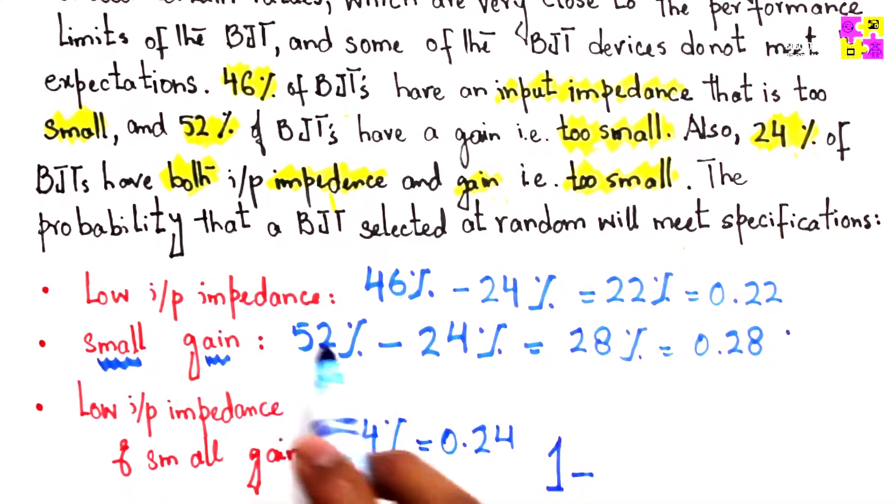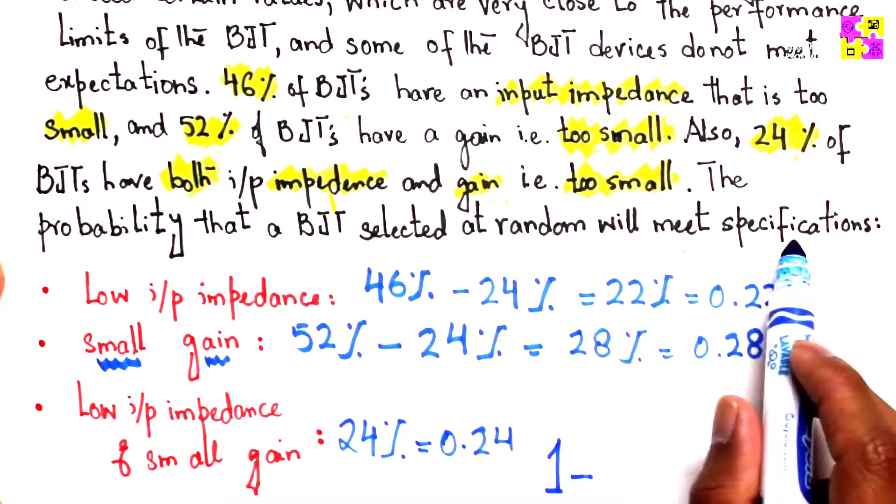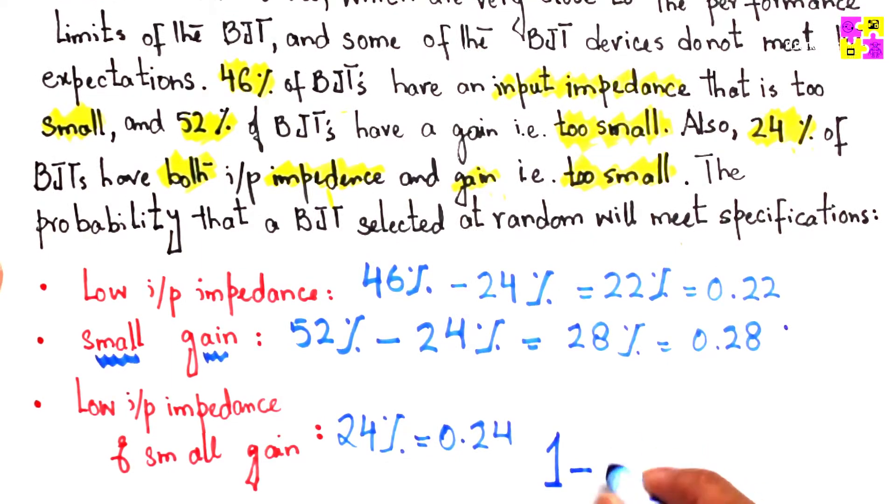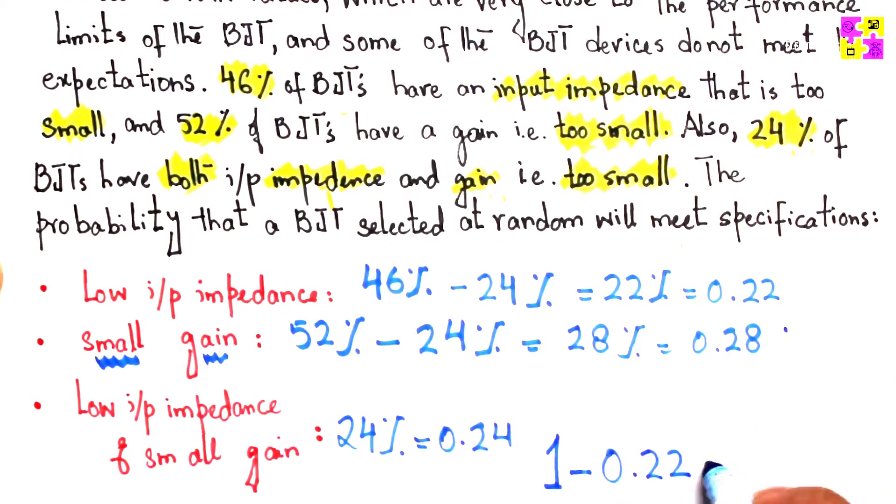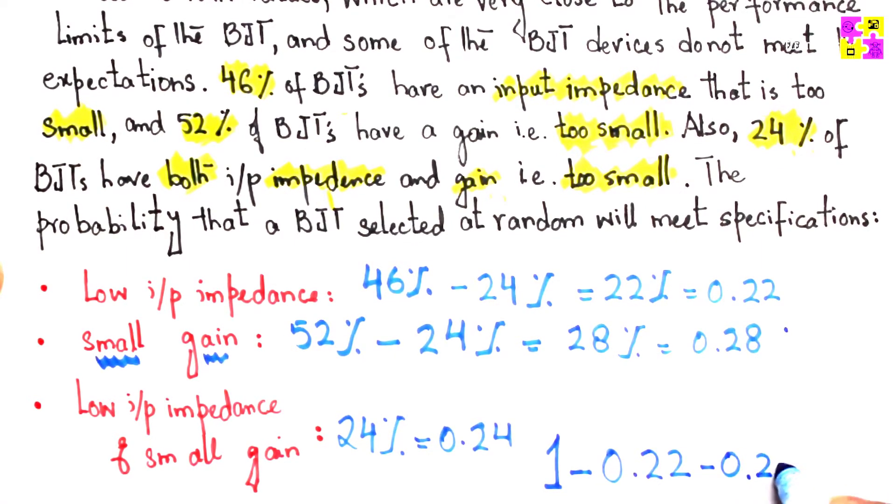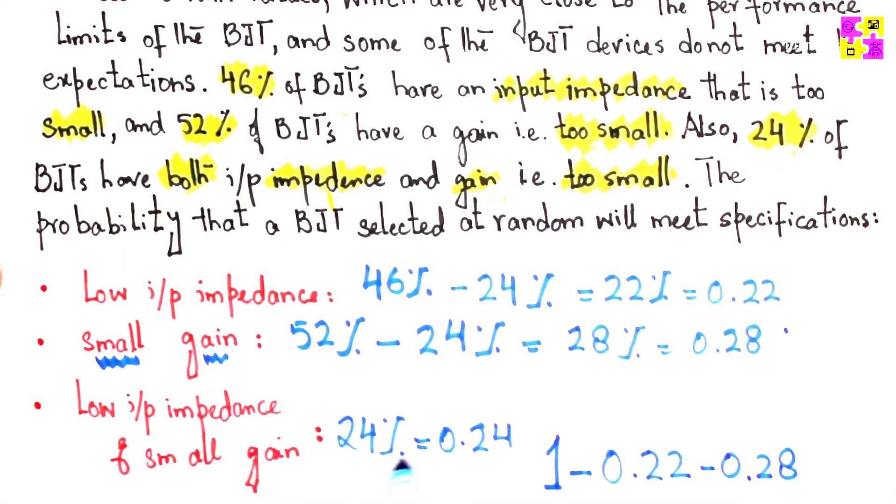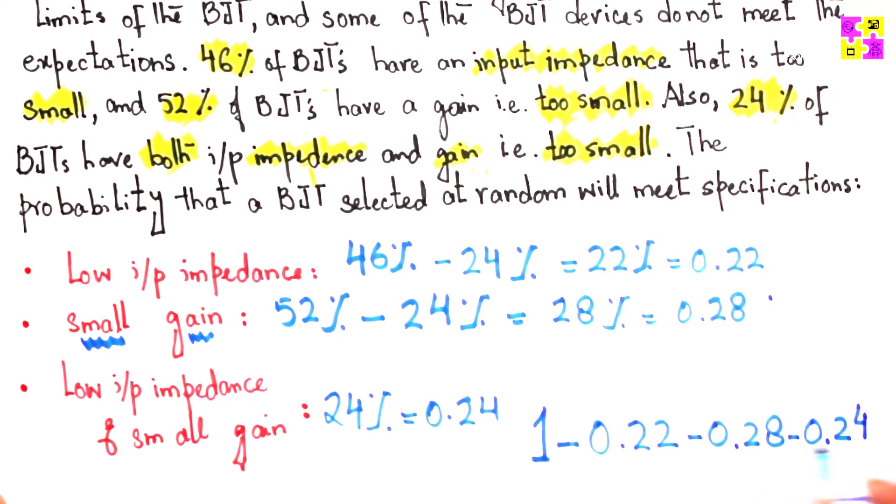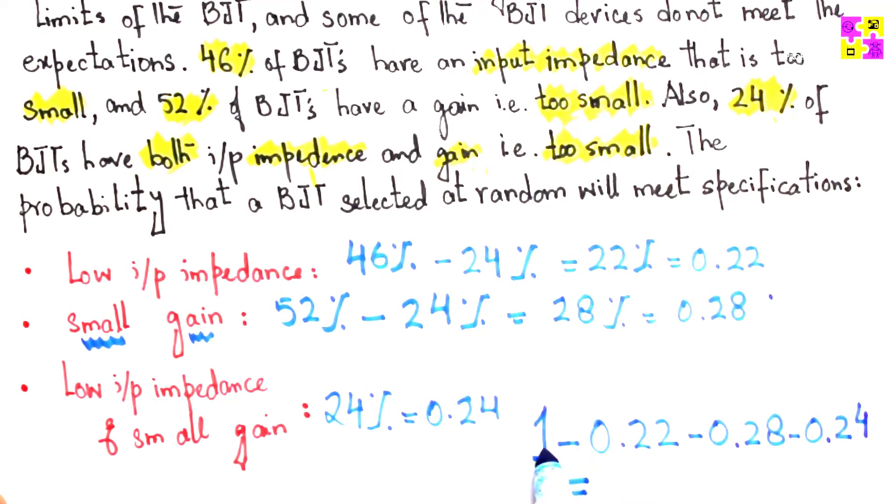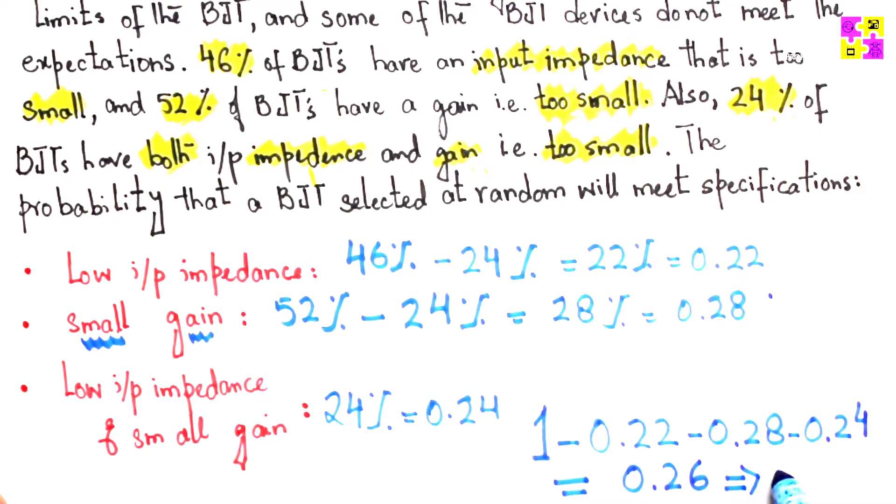If I add these three numbers and subtract from one, that would give me the probability that a BJT selected at random will meet the specifications. So 1 minus 0.22 minus 0.28 minus 0.24, and if I do the math here, this is going to give me 0.26.